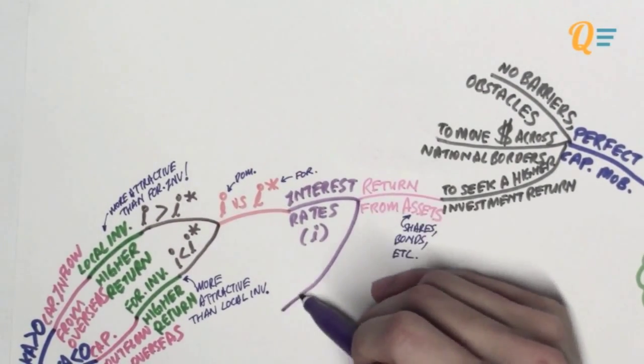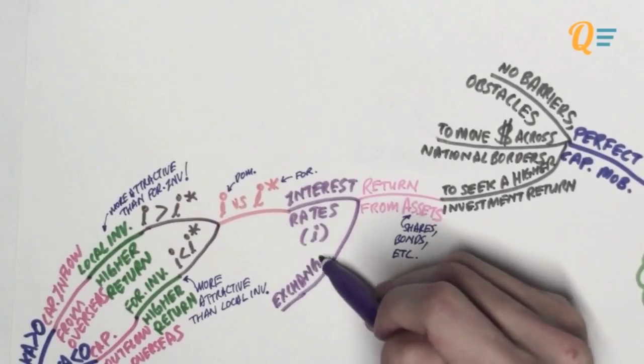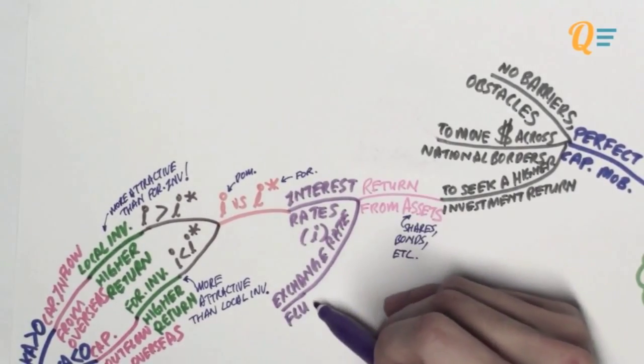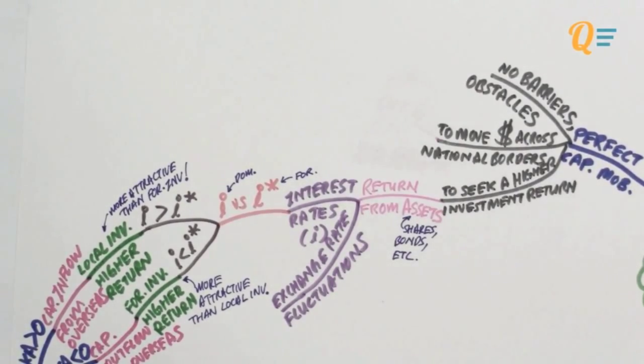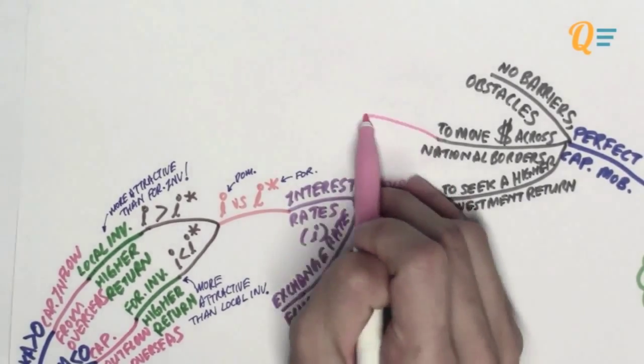Now, there's another way that investors can gain on their investment. Well, it is simply from the exchange rate fluctuations that can occur between two economies. But you don't really have to know this for introduction to economics, so we're just going to skip that.